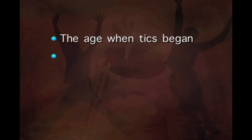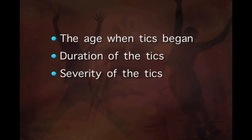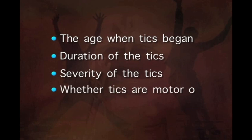In general, four characteristics are used to identify and diagnose TIC disorders: the first is the age when TICs began; the second is the duration of the TICs; the third is the severity of the TICs; and the fourth is whether TICs are motor, vocal, or both. These characteristics will help us identify whether a TIC disorder is present, and if so, which type of TIC disorder is present in a particular individual.